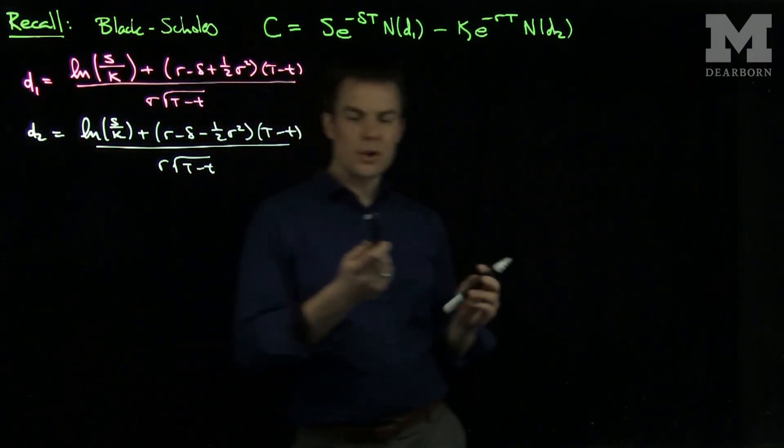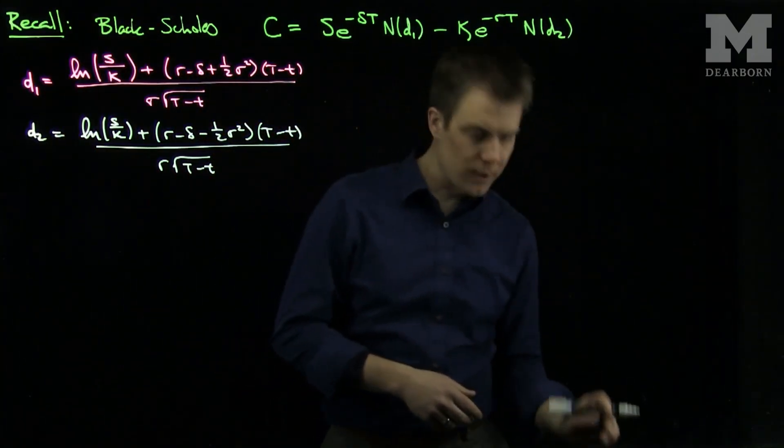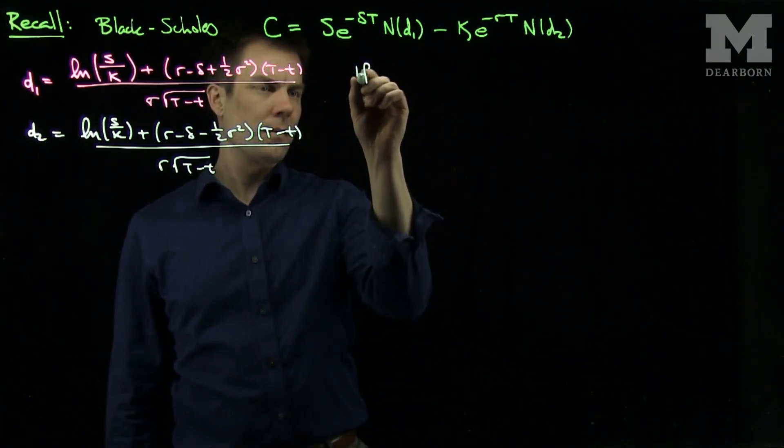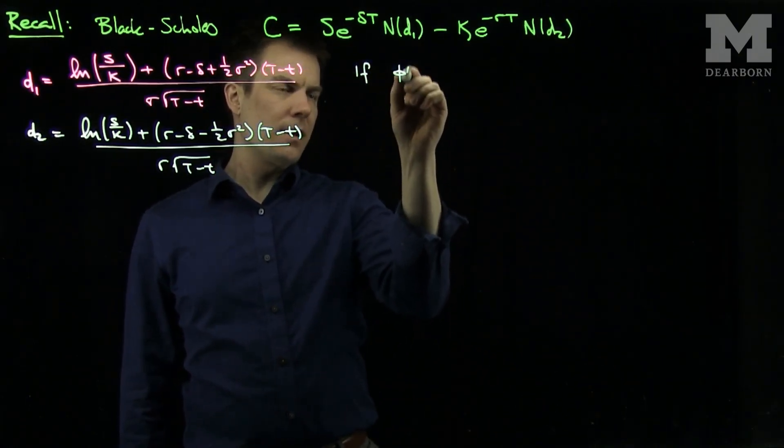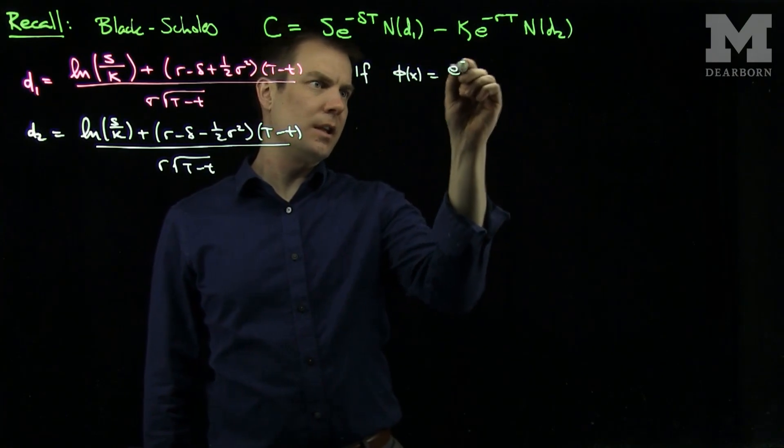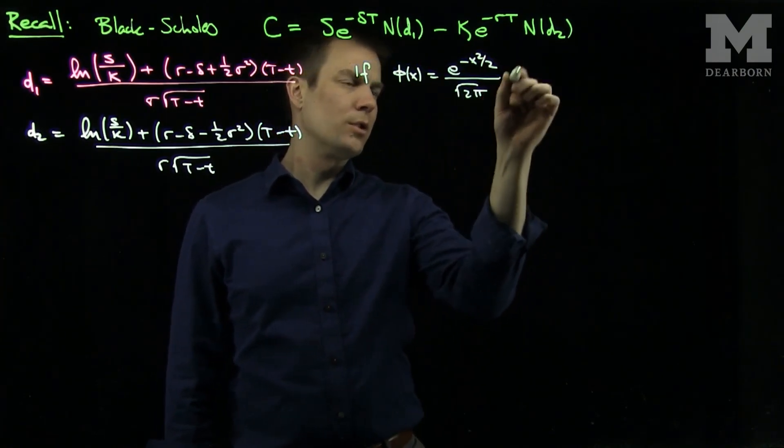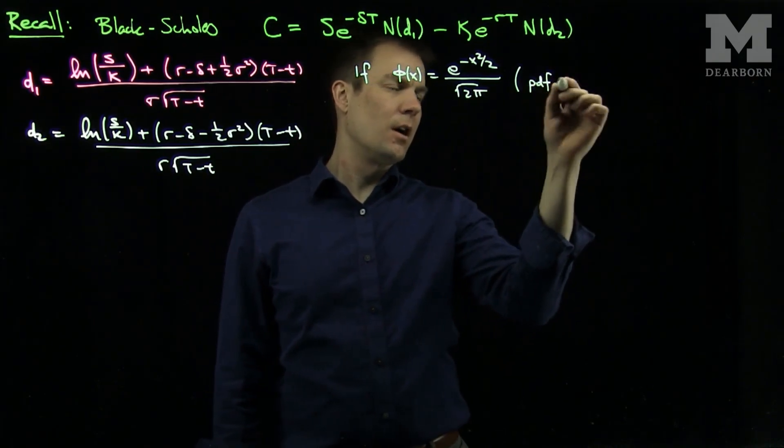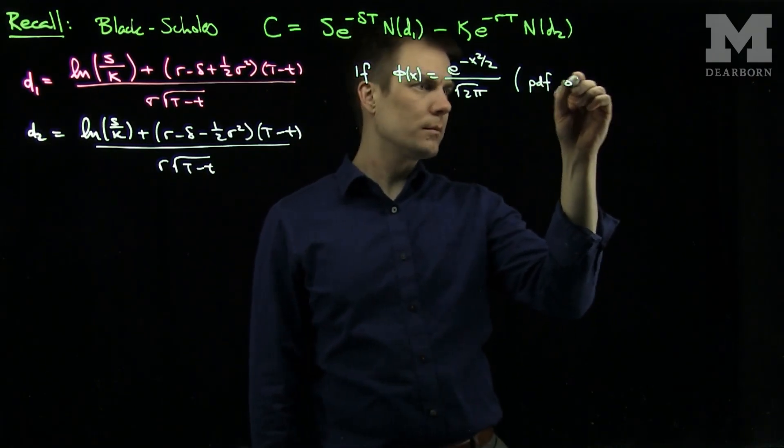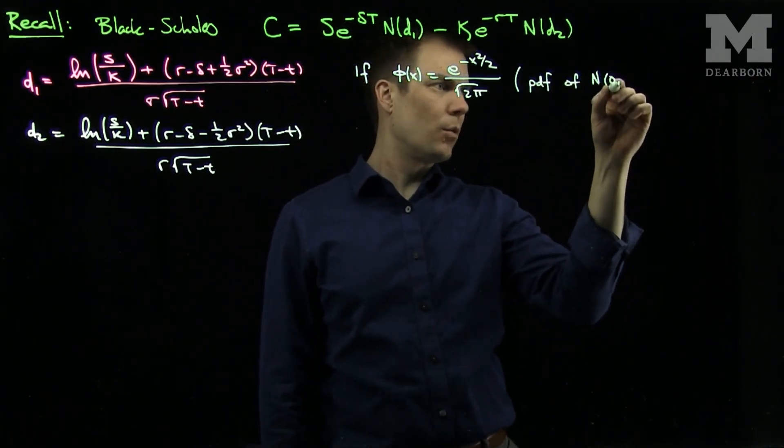Now we know there's a relationship between these things over here, so if phi of x is e to the negative x squared over 2 over the square root of 2 pi, which is just the pdf of a normal 0,1 random variable.